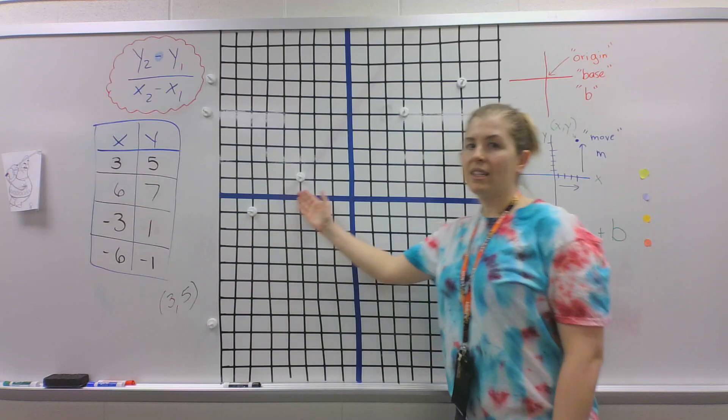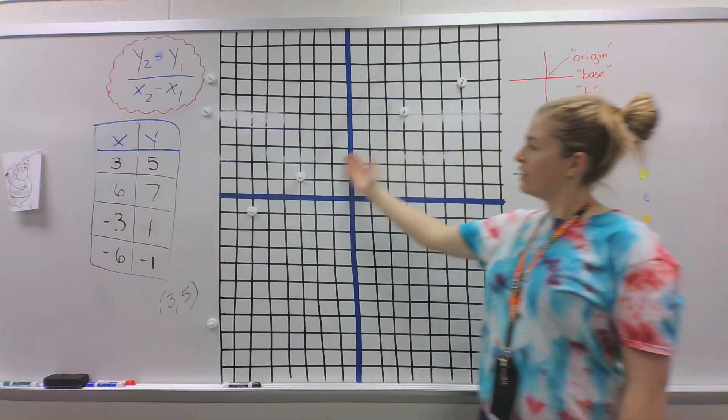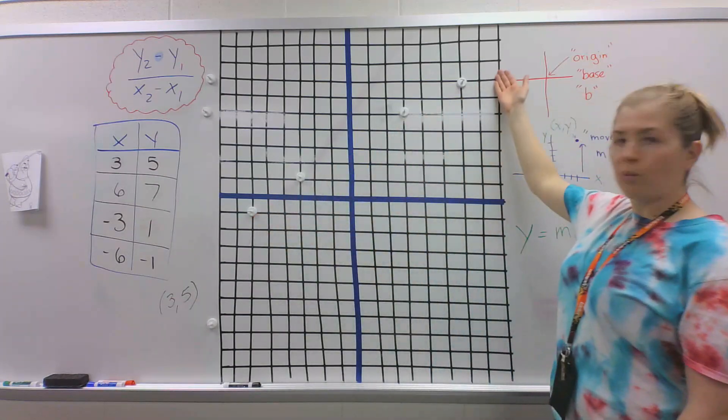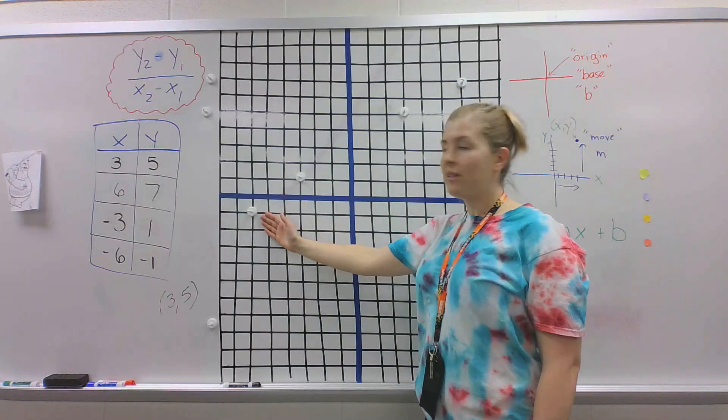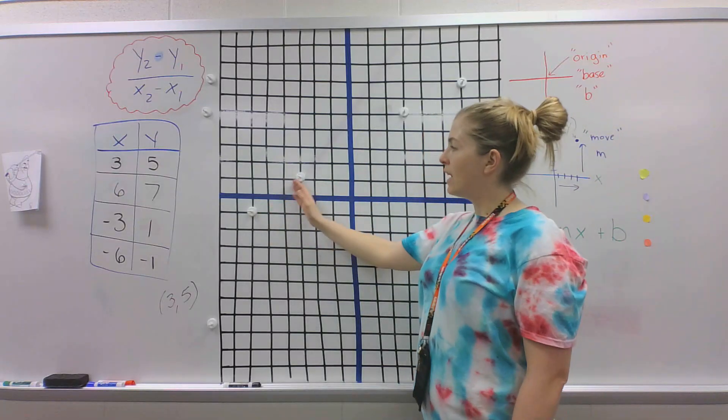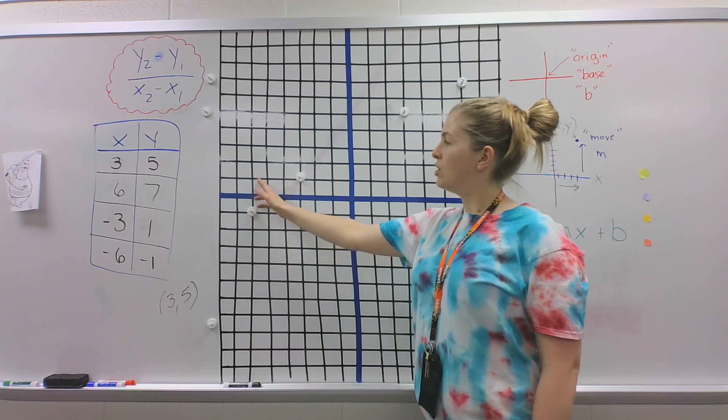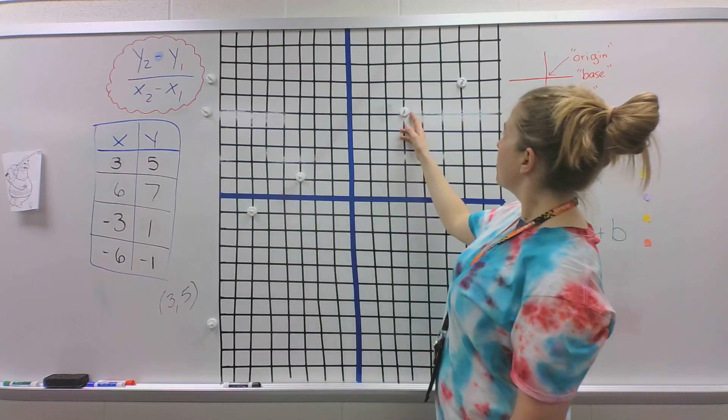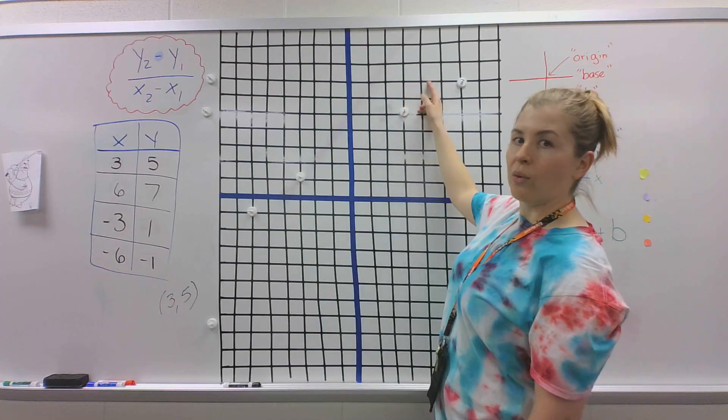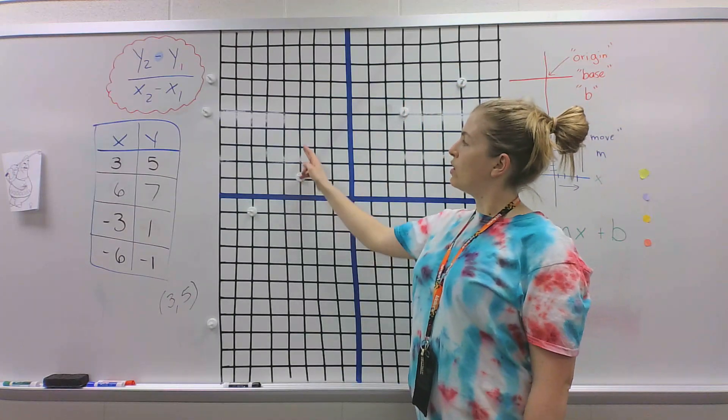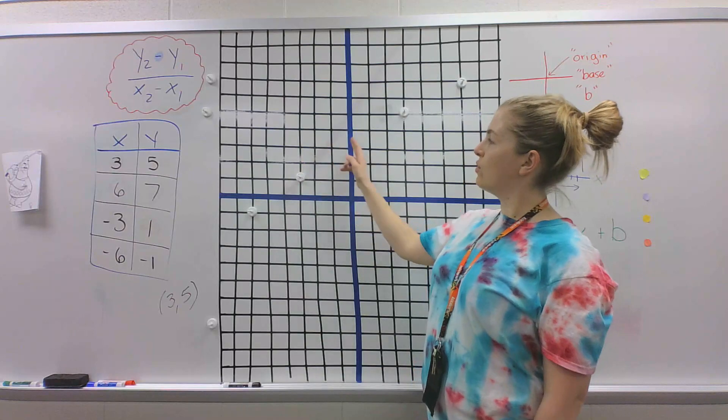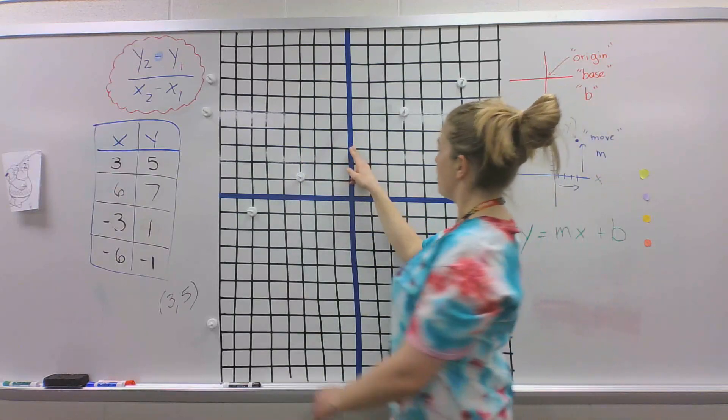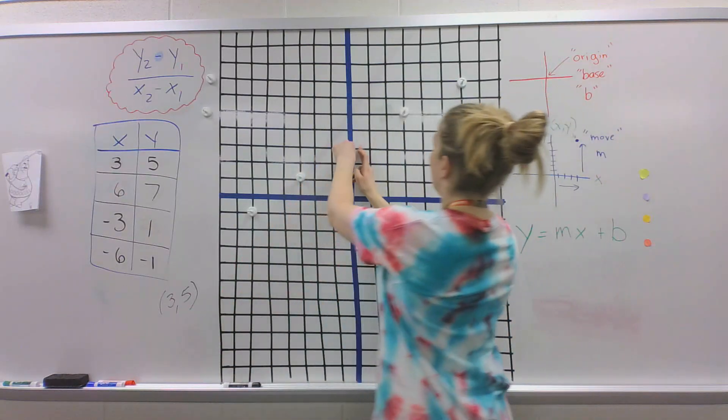So this makes our line. Can you guys notice any other point you think that might be on this line, just based off the pattern? I noticed from one point to the next, we go up 1, 2, and over 1, 2, 3. Here, go up 1, 2, over 1, 2, 3. So if I went up 1, 2, over 1, 2, 3, maybe this point is on our line.